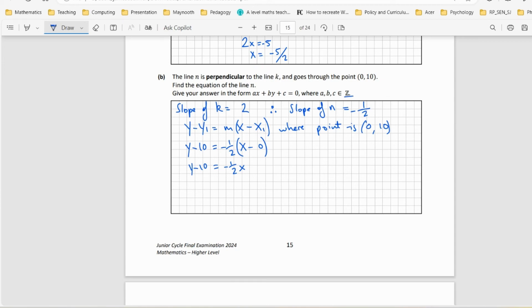They want it in this kind of form with integers, so no fractions. Let's move everything over to one side. We'll move the x over, so that'll be 1/2x + y - 10 = 0.